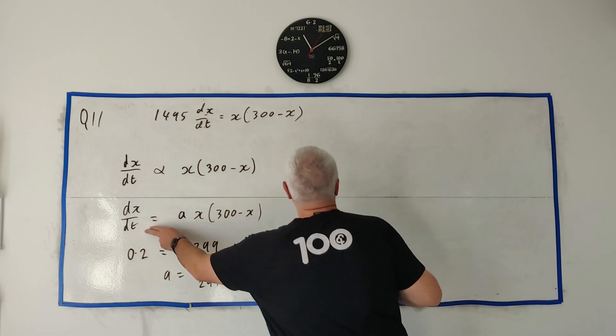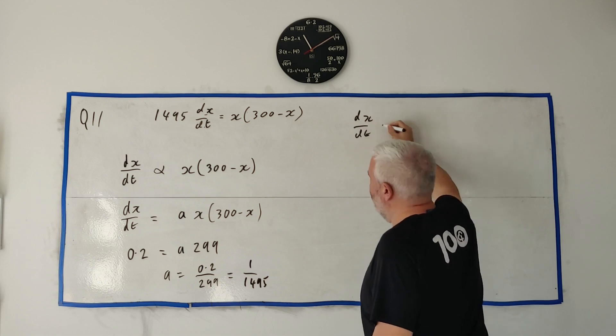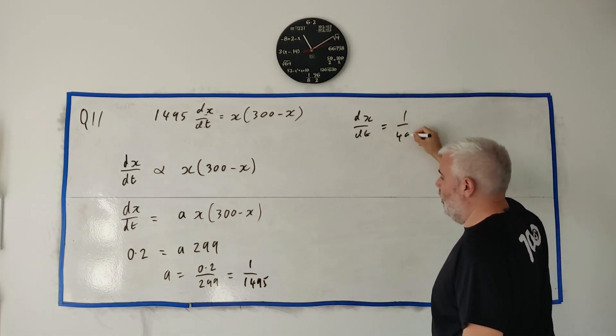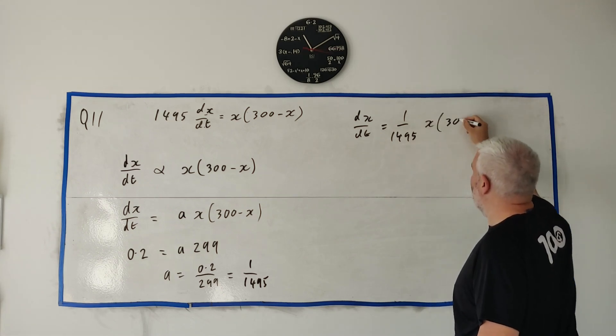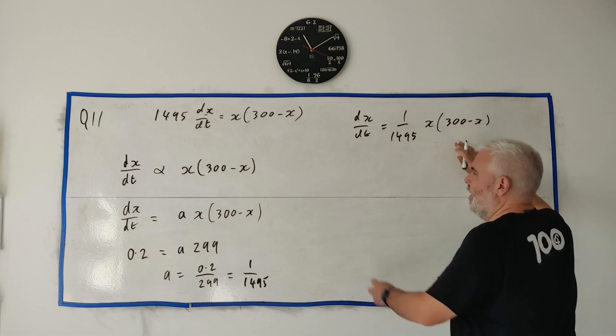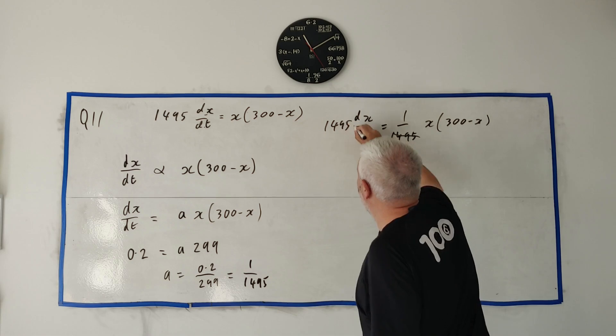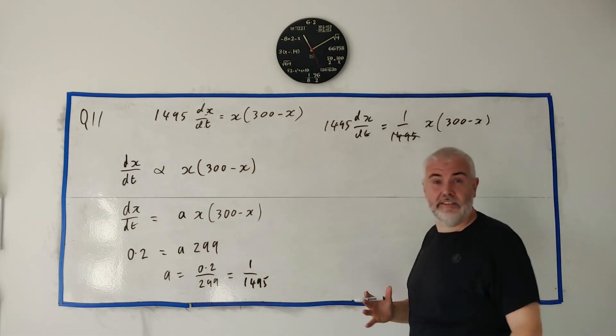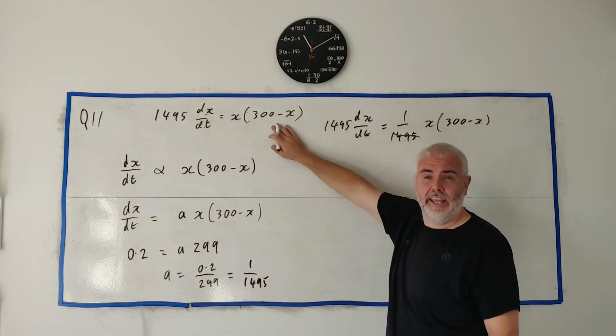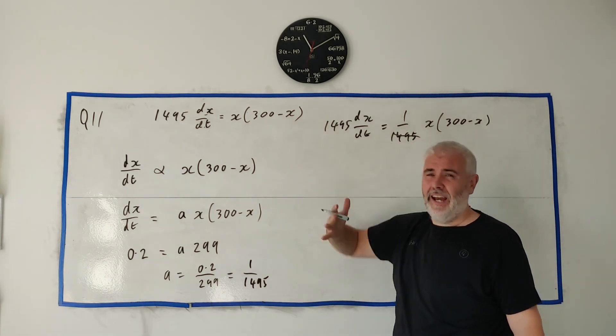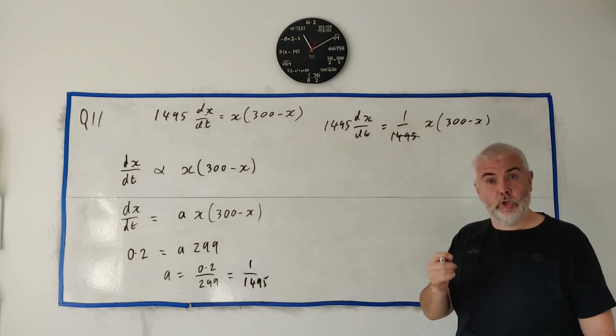Which is where this number comes in. So, if we write this equation one more time. We would get dX/dT is equal to 1 over 1495 multiplied by X multiplied by 300 minus X. And we need to multiply this by both sides. 1495. And we get the equation they started off with. That's two marks. They just wanted to make sure we had that. We're going to need to use this in part B. They just, as an extra question, they asked us this.